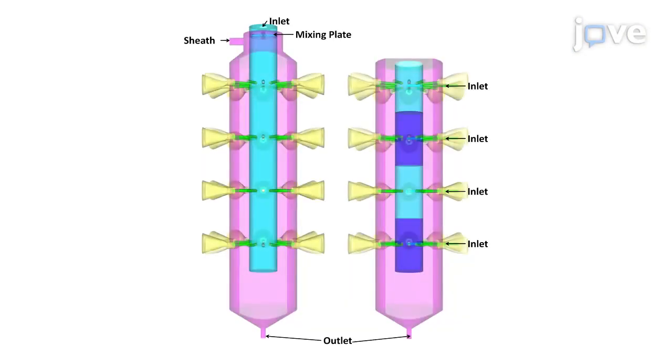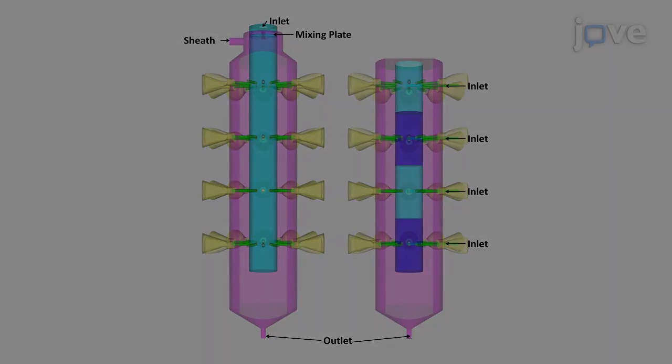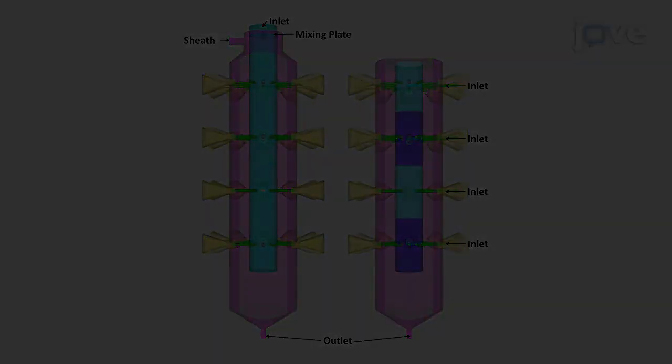To begin setting up a multi-concentration chamber, check it for leaks and set the clean air supply to 23 degrees Celsius.